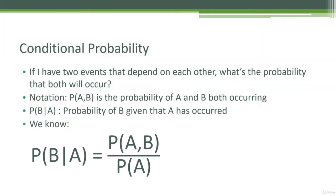The basic concept of conditional probability is that if I have two events that depend on each other, I can make a statement about the probability of that second event occurring given that the first event occurred. The notation is twofold: P(A, B) means the probability of both A and B occurring independently of each other, and P(B|A) is the probability of B given that A has occurred. We can tie this together with the equation: P(B|A) = P(A,B) / P(A).